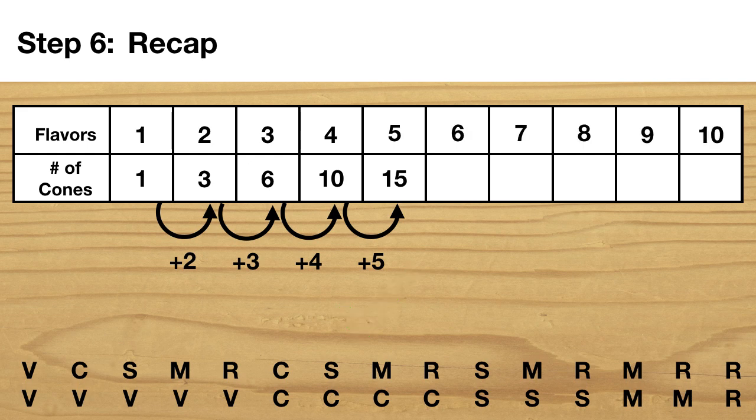When I had six flavors, I would just have to add six. There would be 21. For seven flavors, I would just add seven, giving me 28.